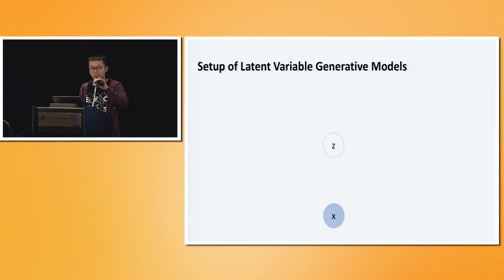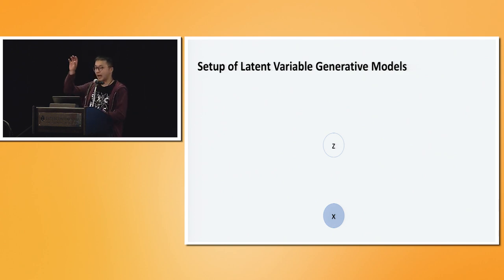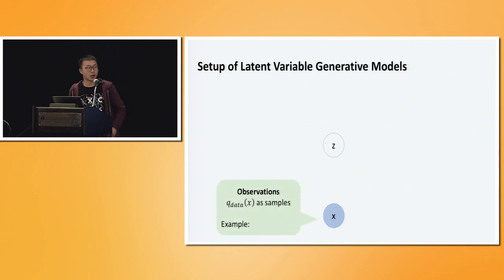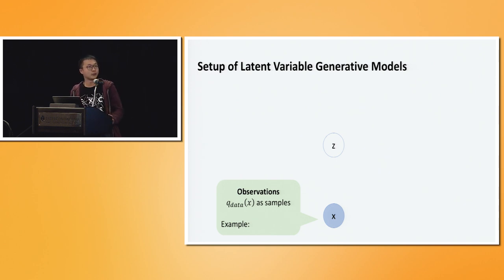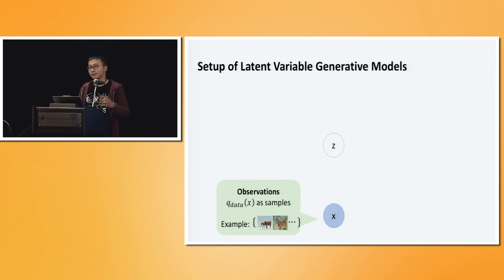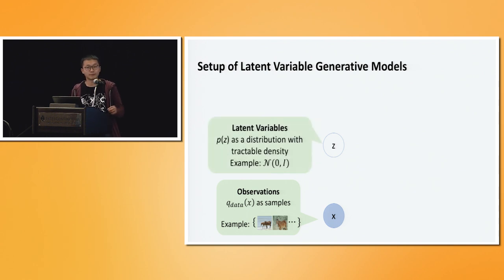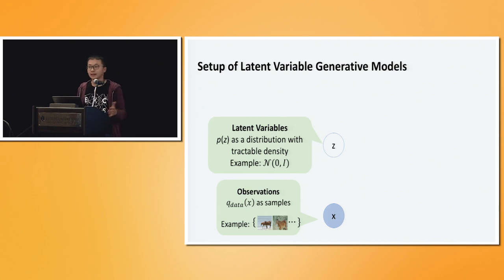Let me explain some setup. We have two variables, x and z. The variable x, which is usually called observations, usually has a complex distribution that we are trying to model. We call this distribution q_data. Usually we are given some examples, some samples from this distribution, such as a dataset of images. This dataset usually has a lot of different varieties, such as object classes, lighting, and poses. To capture these varieties, we use another variable z, which is usually called the latent variable. On this latent variable, we define some simple prior distribution p(z) that has a tractable density — for example, a Gaussian.